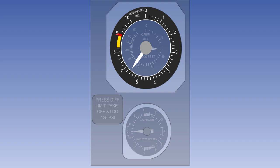The cabin differential pressure gauge indicates the difference between the air pressure inside the cabin and the outside air pressure, and is generally calibrated in pounds per square inch. In the event of a malfunction of the pressure controller or outflow valve, a high pressure reading on this instrument would indicate that the safety valves were controlling the cabin pressure at the structural maximum pressure differential.